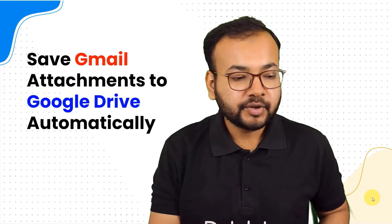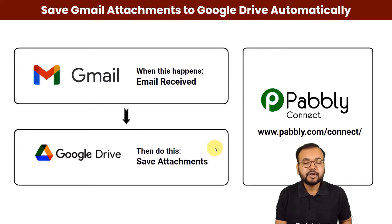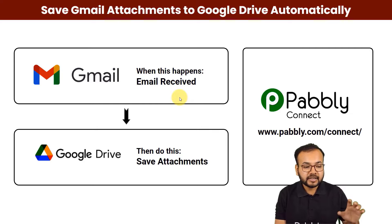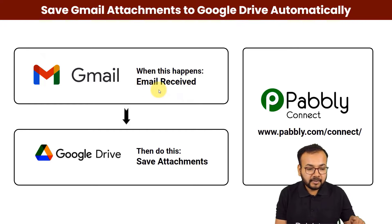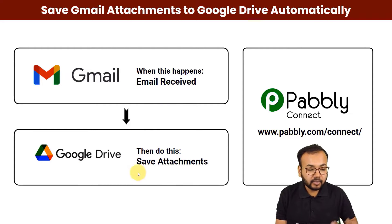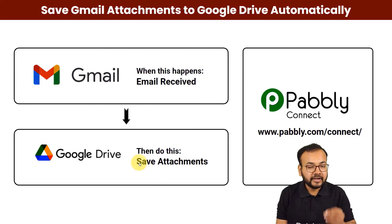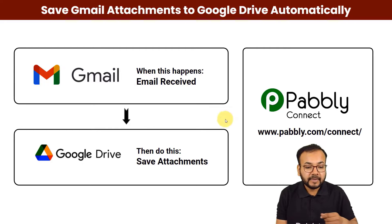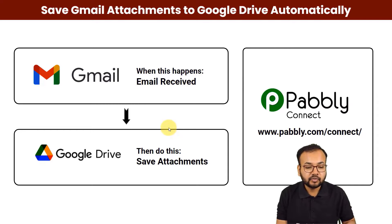Let me show you how it is going to work. This will be the flow of this automation — as and when you receive any email with an attachment, the same attachment is going to be saved in your Google Drive automatically. So you need not manually download attachments and upload them to Google Drive. It will surely save a huge amount of your time. To make this happen, we are going to use a feature of Pabbly Connect called Email Parser.